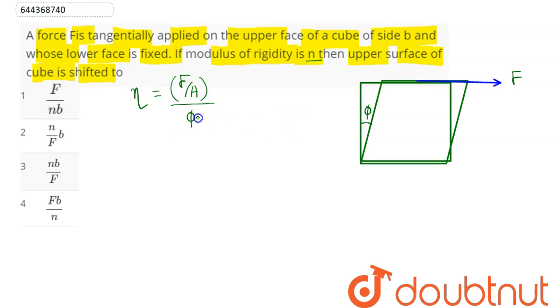So this here is equal to phi. This eta comes out to be F here is F. Area here is side squared, since it is a cube, divided by phi.